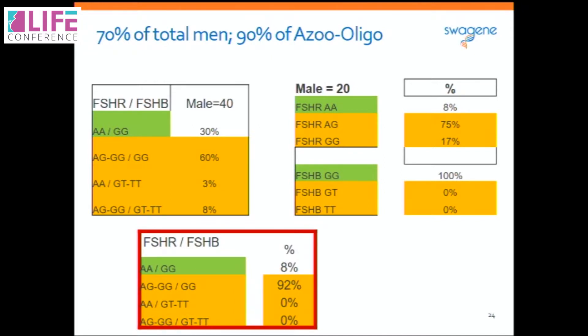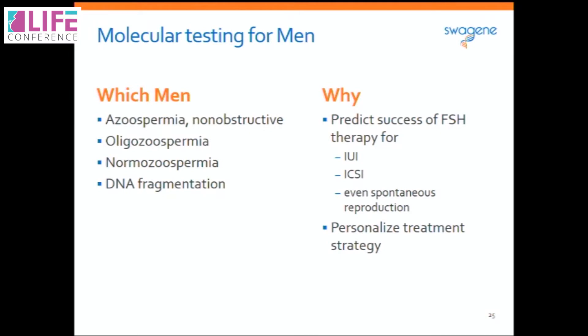Among the 20 men who came with indications of severe to moderate oligozoospermia or azoospermia, 92 percent had genetic variation in the FSH receptor — a surprising and dramatic statistic. Testing for FSH receptor and FSH beta subunit genetic variations should be considered across the spectrum from azoospermia to normal sperm count with poor quality — covering motility, morphology, and DNA fragmentation levels. This allows clinicians to predict success rates of FSH therapy and personalize treatment strategies.